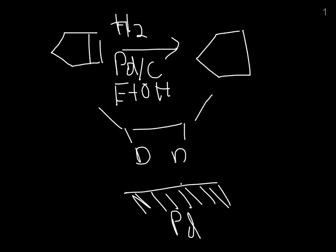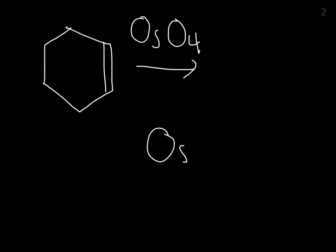Now, the next reaction, the next one where you don't need to know the mechanism, is dihydroxylation. And the template reaction, let's say you have cyclohexene. You can hit it with osmium tetroxide, which looks kind of like this. Actually, sorry, there's no hydrogens. They're all double bonded.